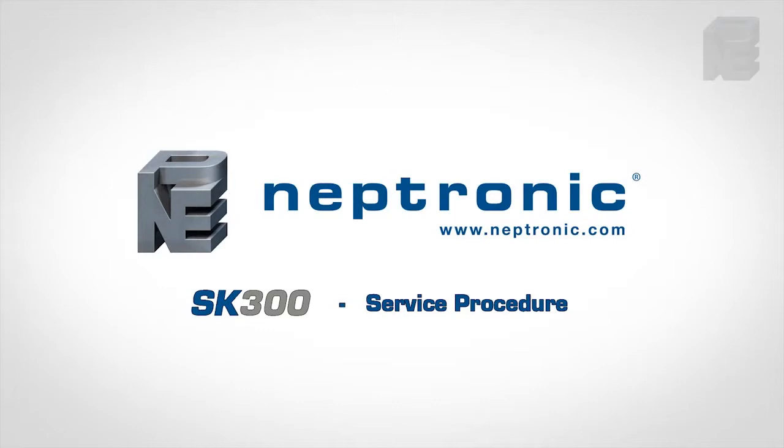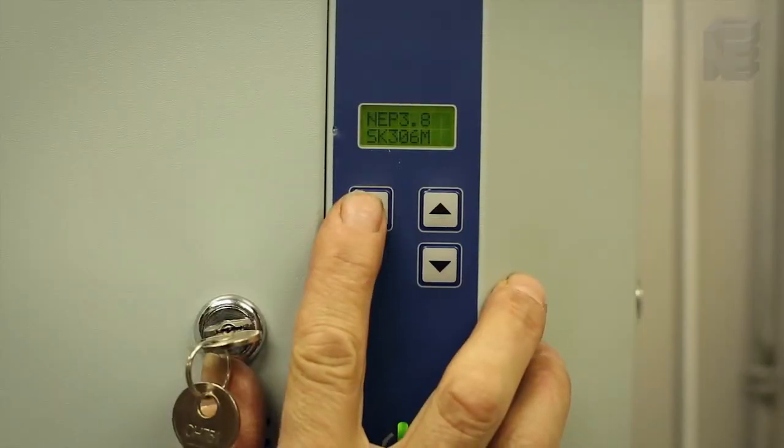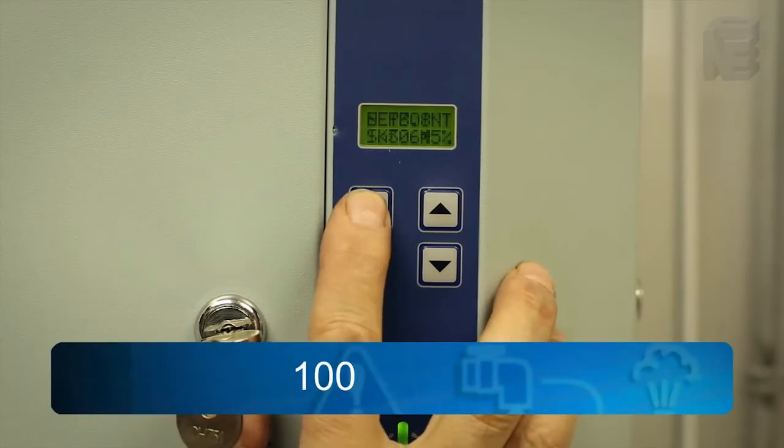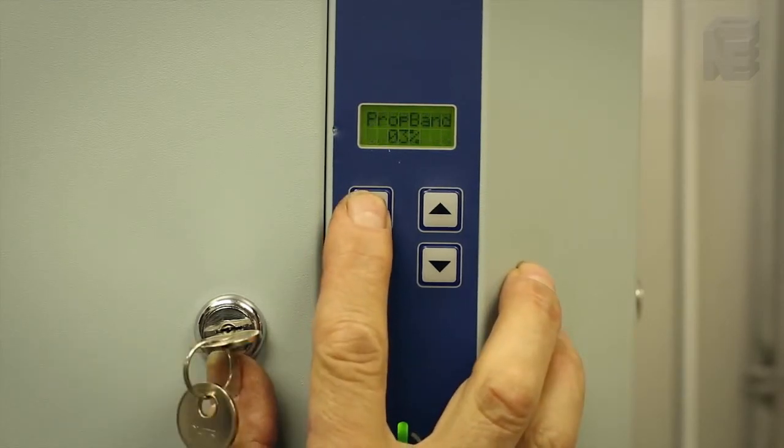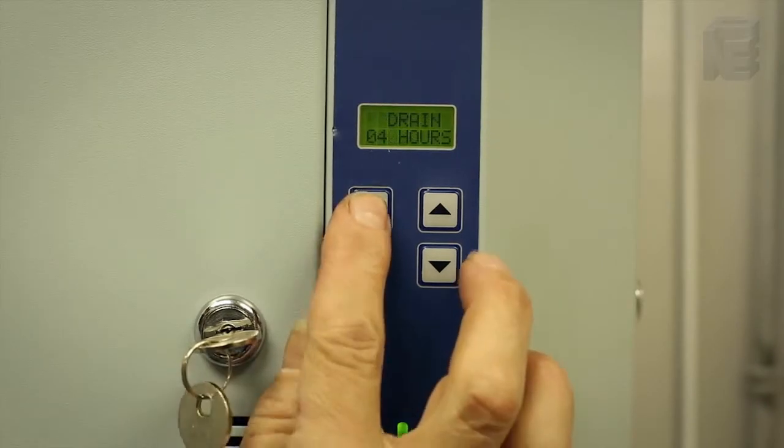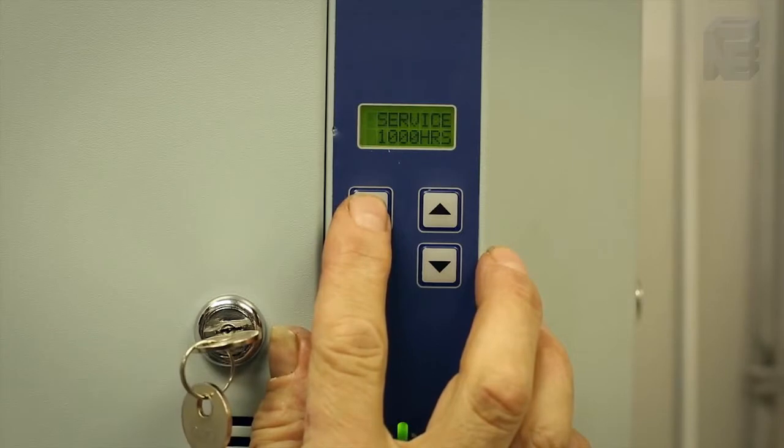SK300 service procedure. All SK300 humidifiers are programmed for a thousand hours operation in the factory. By pressing the menu button several times you will bring up on the digital display both the hours run and the service hours parameters.